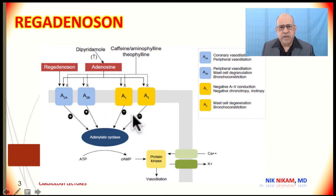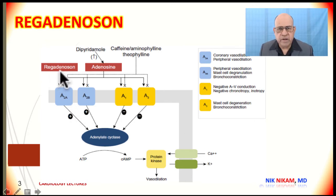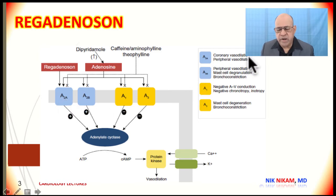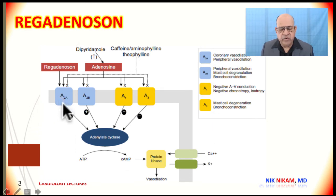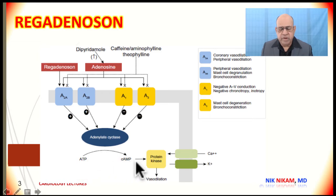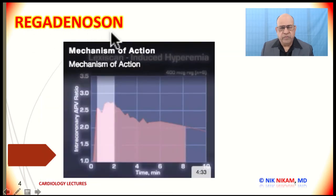This was especially problematic in patients with a history of asthma or chronic obstructive pulmonary disease. In contrast, regadenosine primarily activates adenosine 2A receptors, which are predominantly located in the coronary vascular bed. By activating the A2A receptors, regadenosine converts ATP into cyclic AMP, increasing the production of protein kinase, which leads to significant vasodilatation.